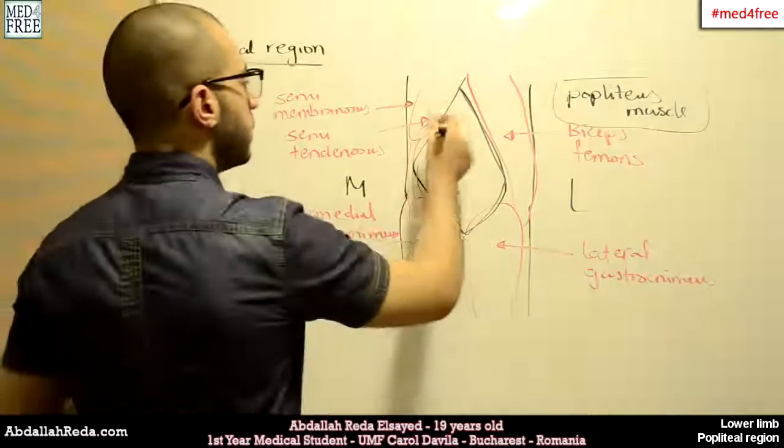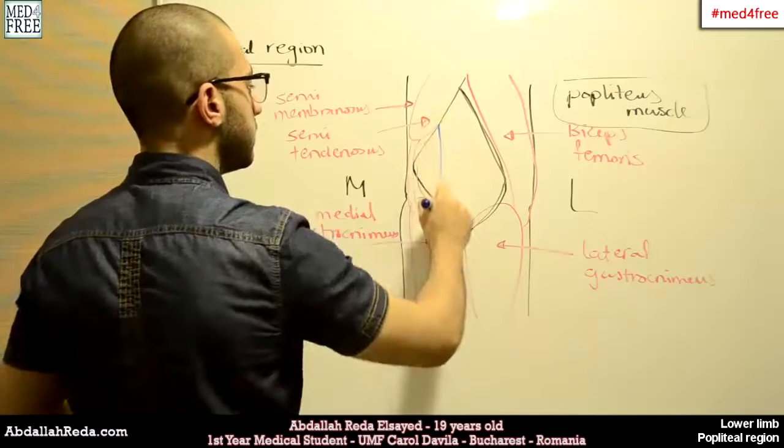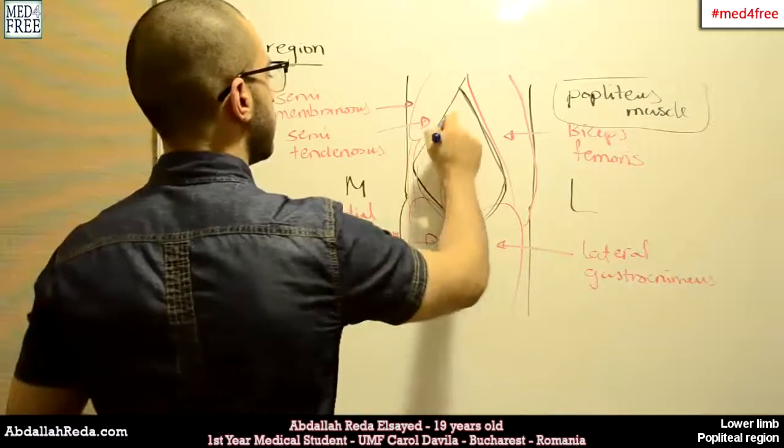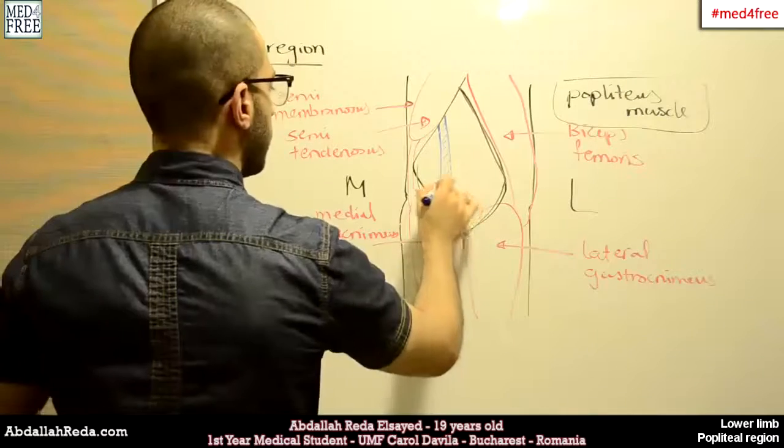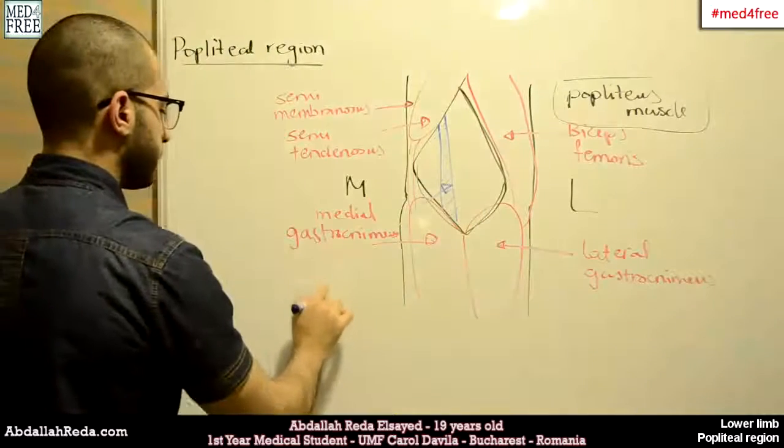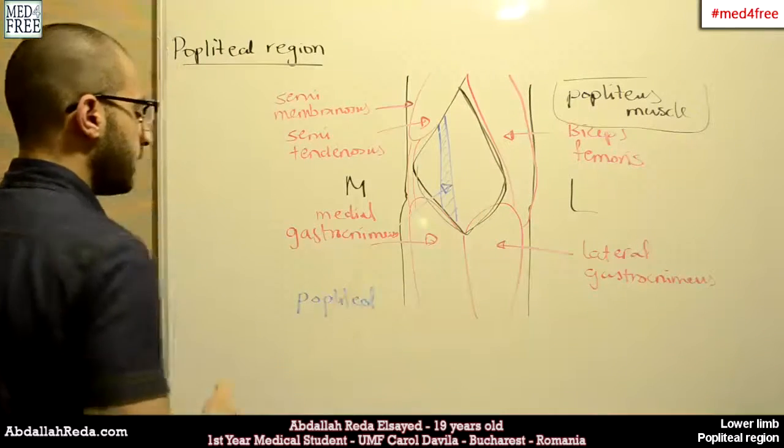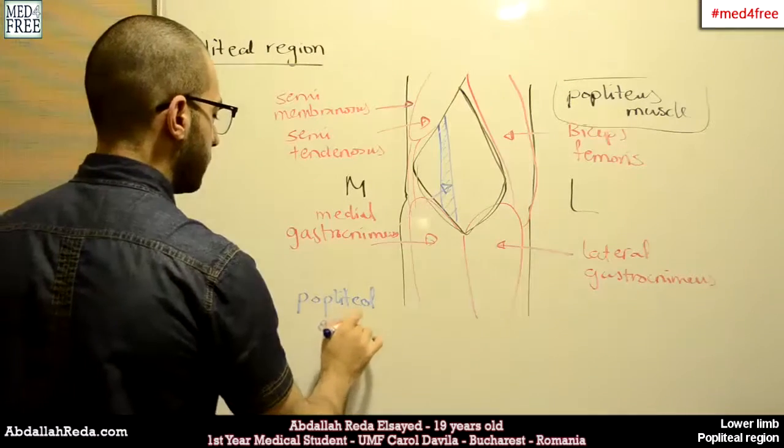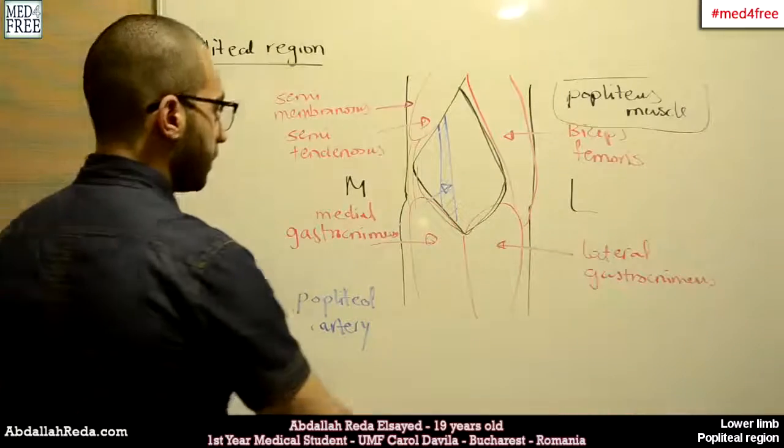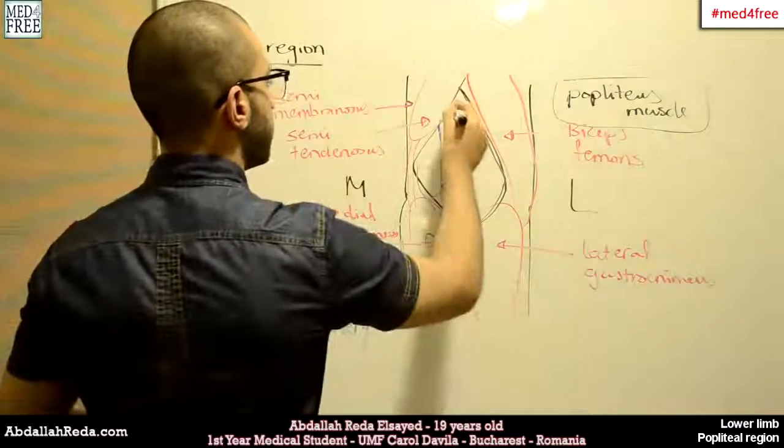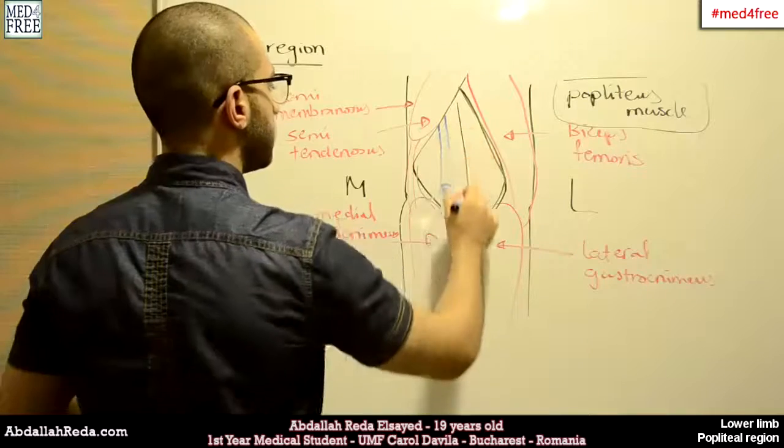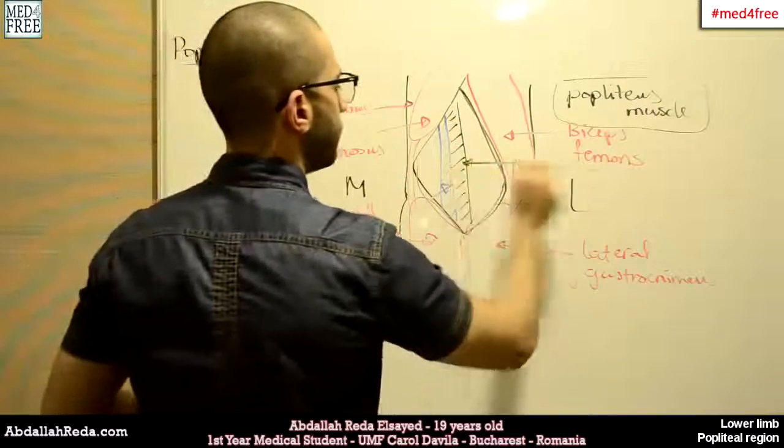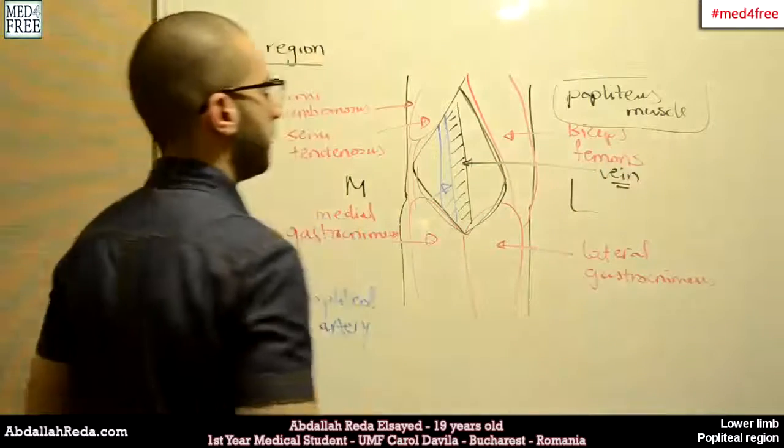So here we have, most medially, the popliteal artery. And then we will have the popliteal vein around here. So this is the vein, popliteal vein.